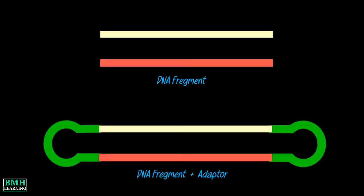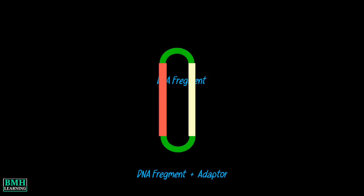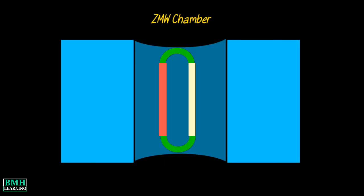Template DNA fragments, shown in two different colors, are provided with hairpin loop adapters on both sides, creating a circular DNA sequencing template.